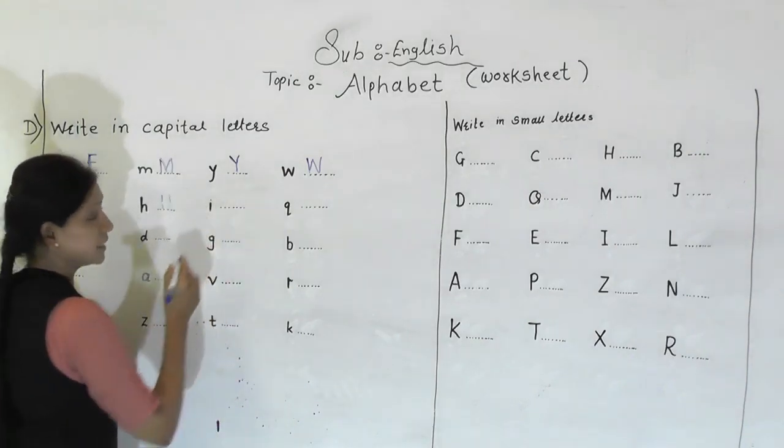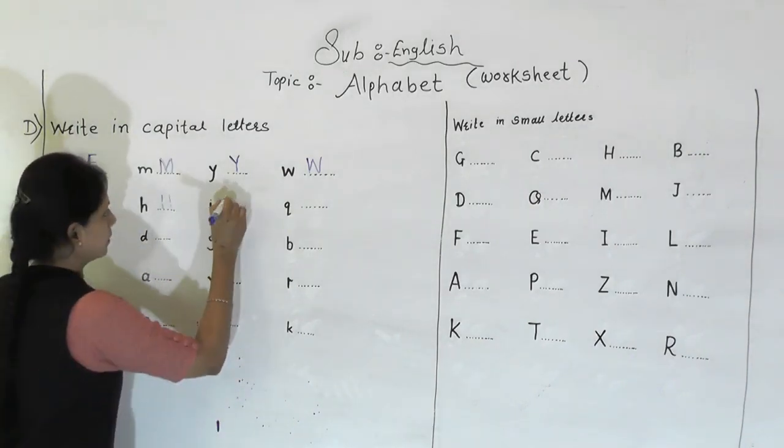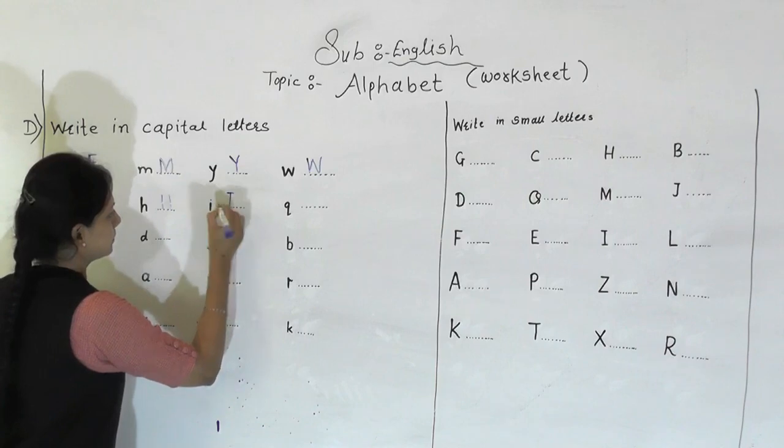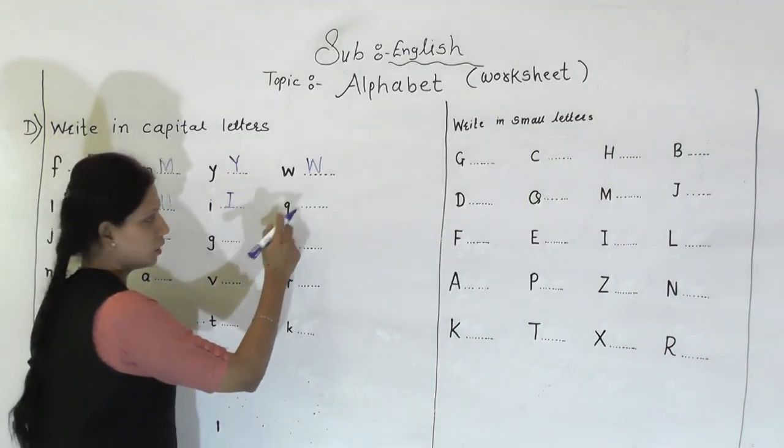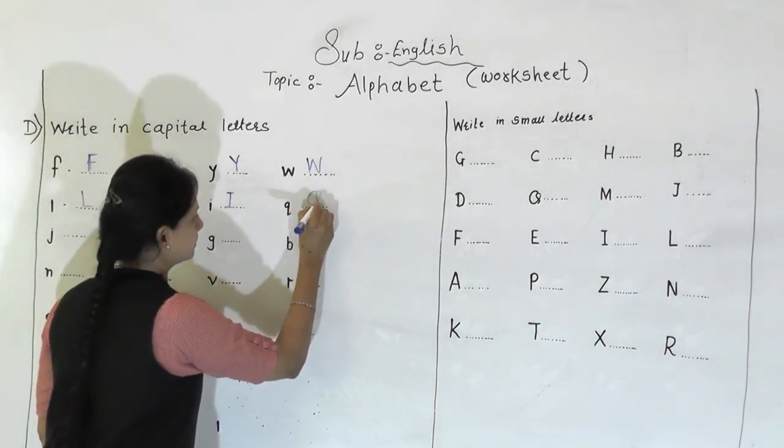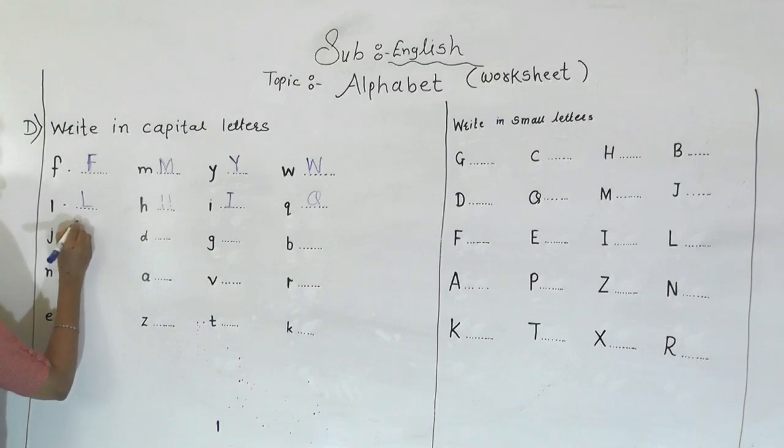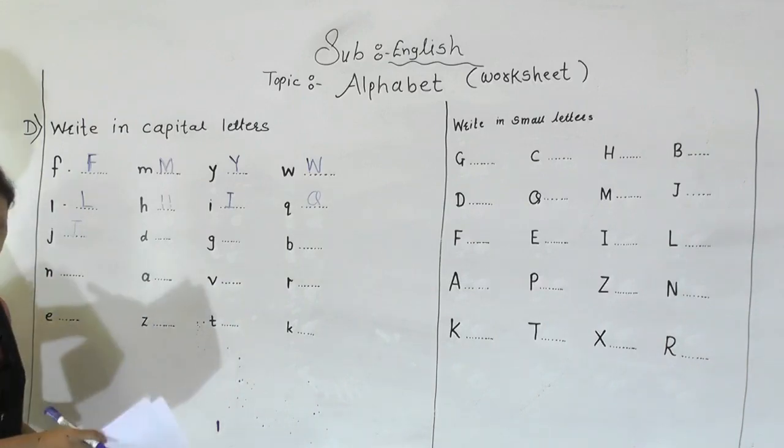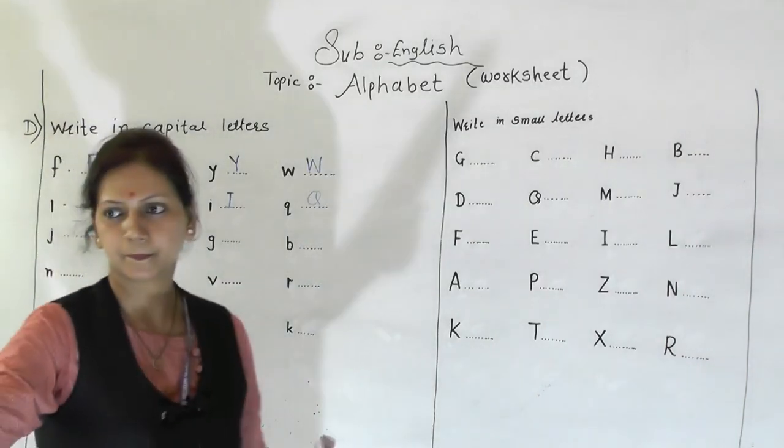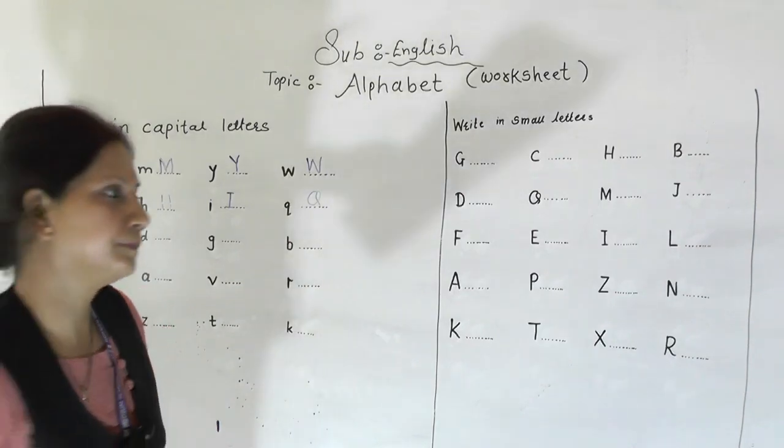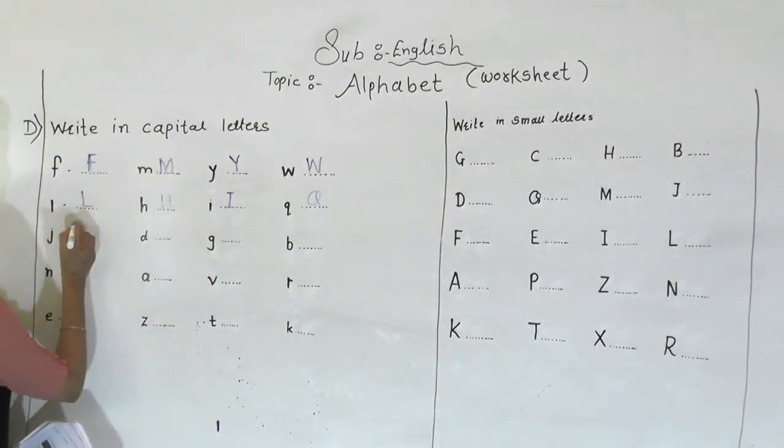Next is E means I, capital I. Then Q, capital Q. Then J, J, capital J.